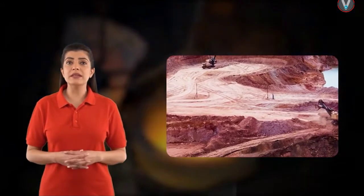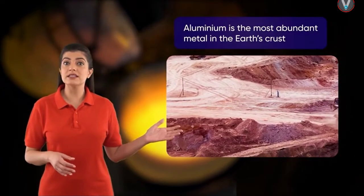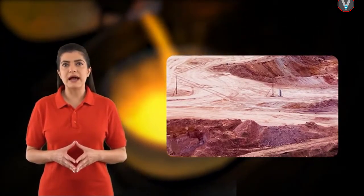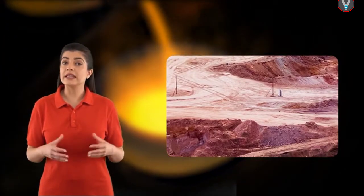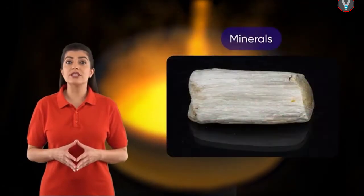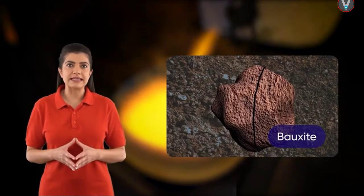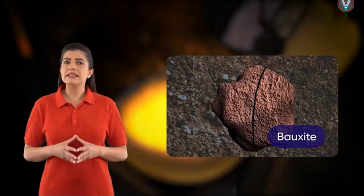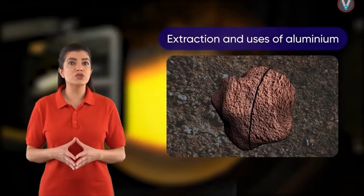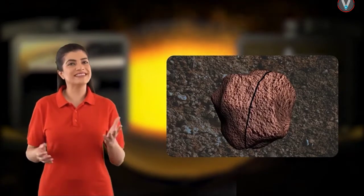Did you know that aluminium is the most abundant metal in the earth's crust? It is rarely found in an uncombined state in nature. It is usually found in minerals such as bauxite and cryolite in the form of aluminium silicates. But how is aluminium actually extracted from its ores and where is it used? Come on, let's find out.